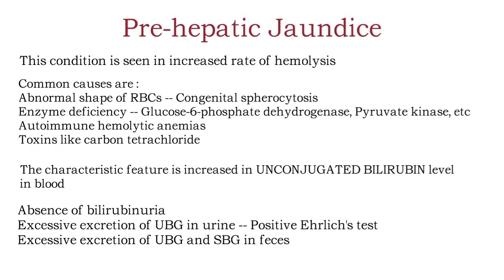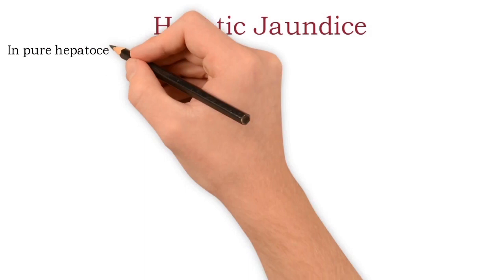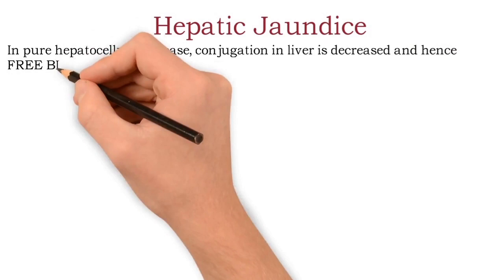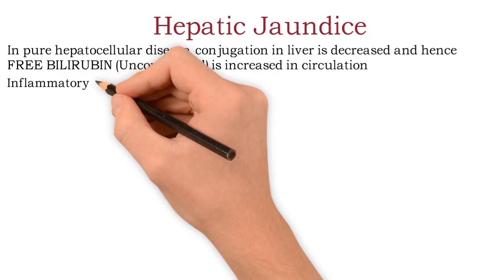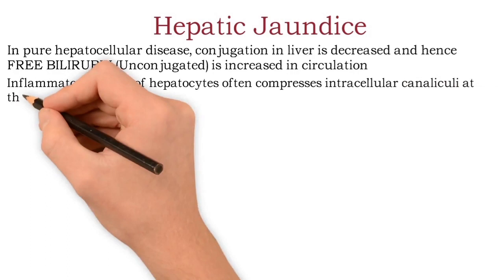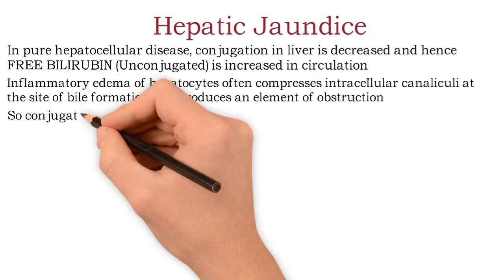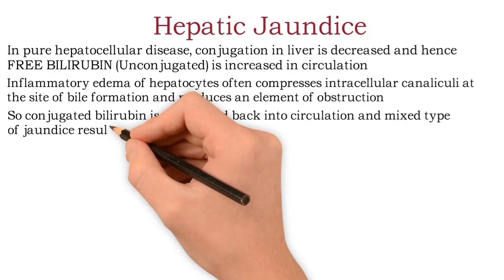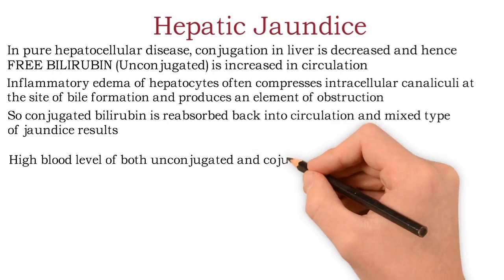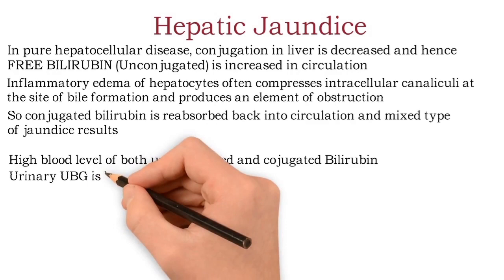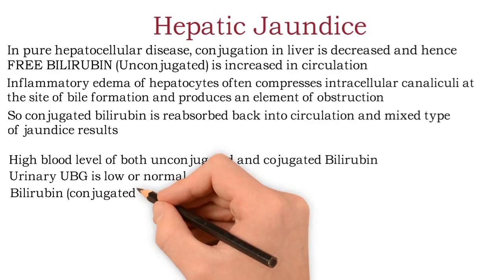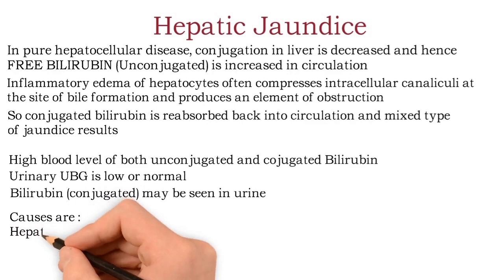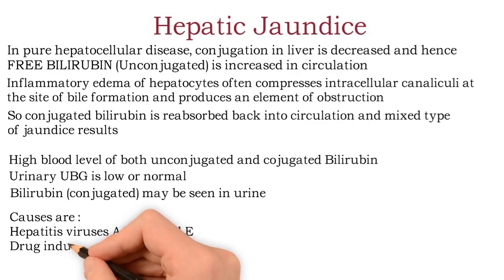Second is hepatic jaundice. In pure hepatocellular disease, conjugation in the liver is decreased, so unconjugated (free) bilirubin is increased in circulation. Inflammatory edema of hepatocytes often compresses the intrahepatic bile canaliculi, producing an element of obstruction. As a result, conjugated bilirubin is reabsorbed back into circulation and a mixed type of jaundice is seen. Lab findings show high levels of both unconjugated and conjugated bilirubin in blood; urinary urobilinogen is low or normal, and conjugated bilirubin appears in urine as it is water-soluble. Causes include infective hepatitis viruses A, B, C, D, or E, and hepatotoxic drugs like chloroform or anti-tubercular drugs.